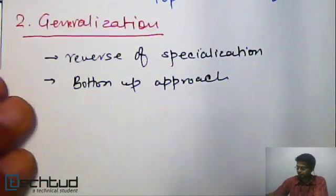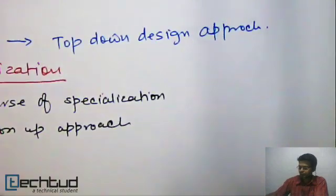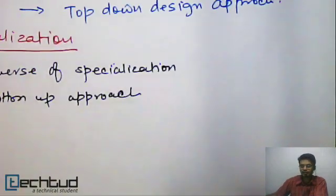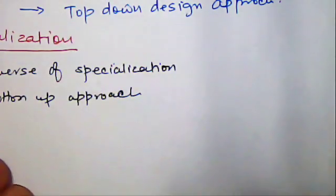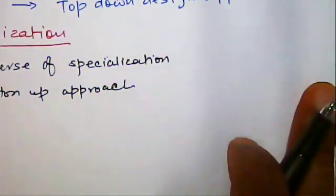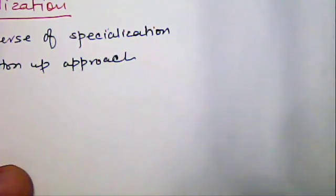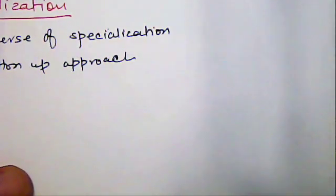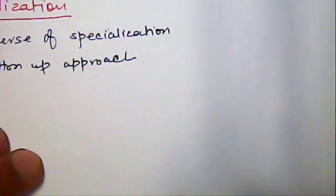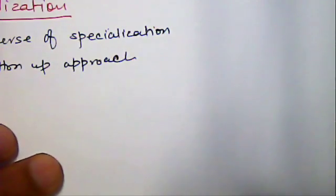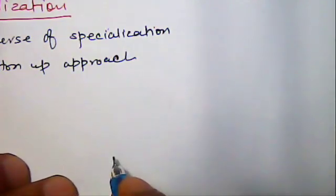So here what we do is we start analyzing our universe of discourse and in this universe of discourse we start by finding out all the possible lower level entity. So for the same example we will start analyzing in reverse manner that is bottom up approach.